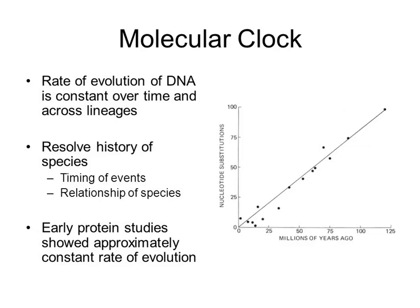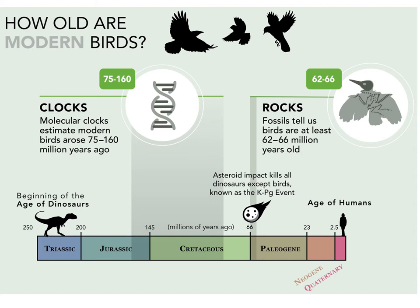The molecular clock follows basic principles: the rate of evolution of DNA is constant over time and across lineages, since DNA is essentially the same across all species in its basic construction. We can find the timing of events or the relationship between species when different species diverge. Early protein studies showed approximately a constant rate of evolution. The genetic clock can alter timelines for us — fossil evidence suggests birds existed at least 62 to 66 million years ago, but the molecular clock indicates birds could have arisen as early as 160 million years ago.